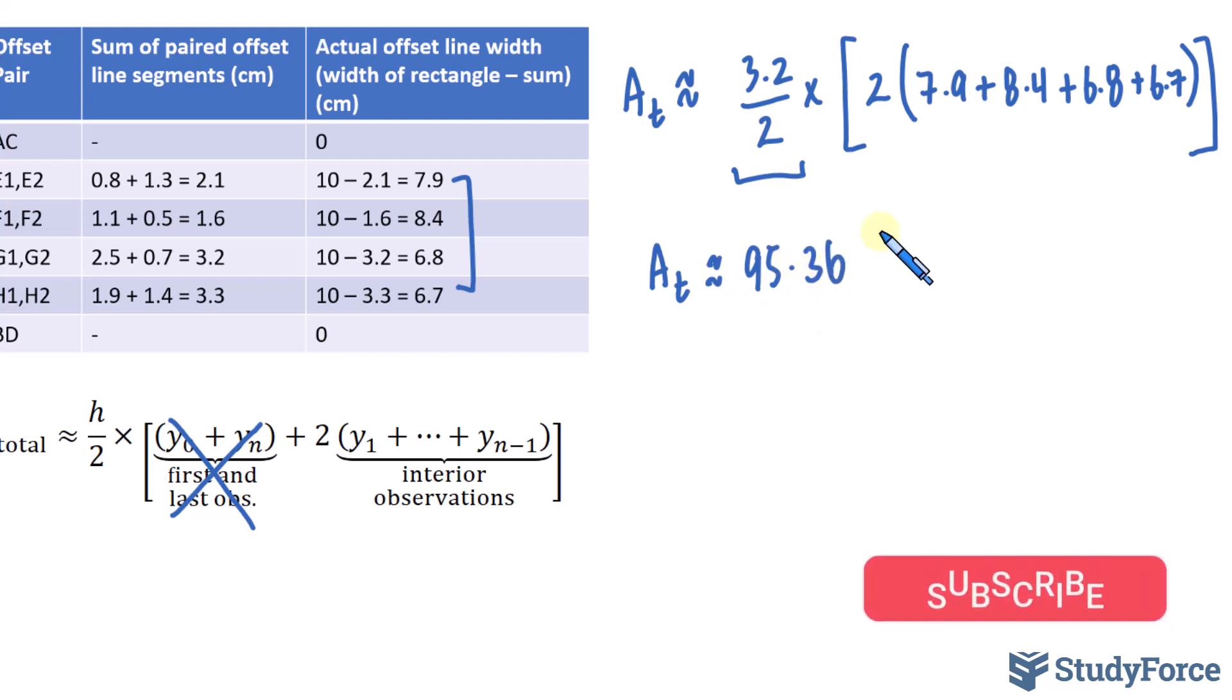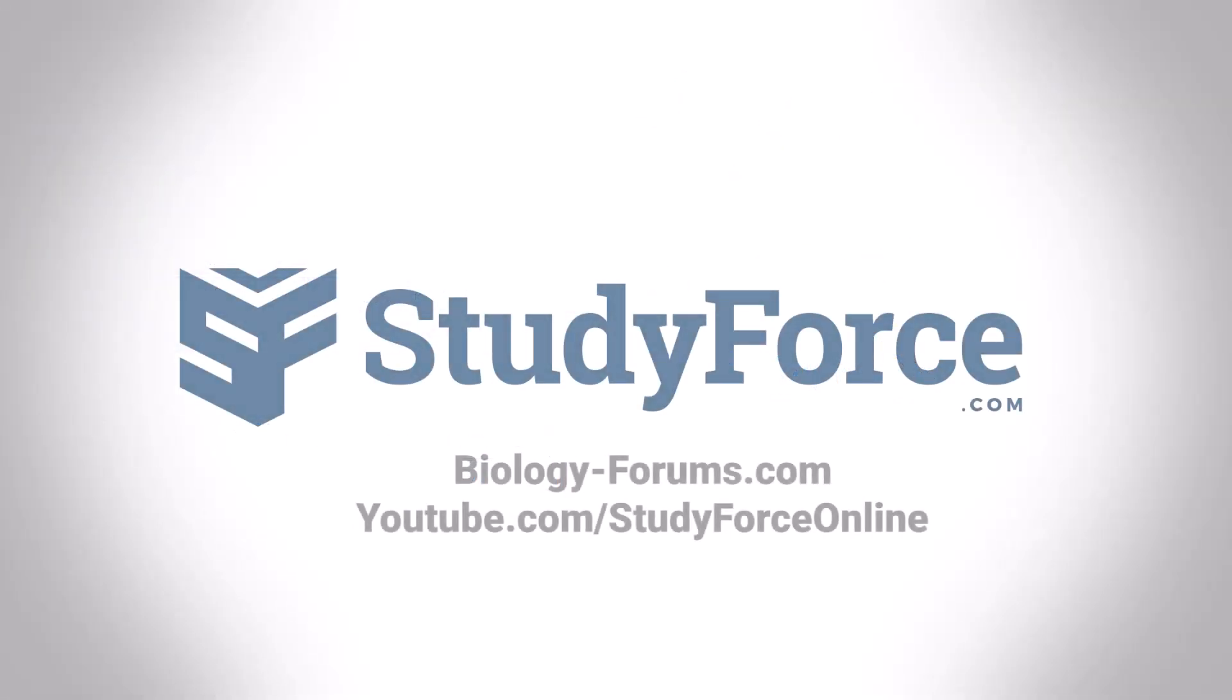95.36 square centimeters. You're more than welcome to round this to one decimal place, where it becomes 95.4 centimeters squared. I hope you found this tutorial helpful. If you have any questions about the modified offset method, please leave them in the comment section below. Thank you for watching.